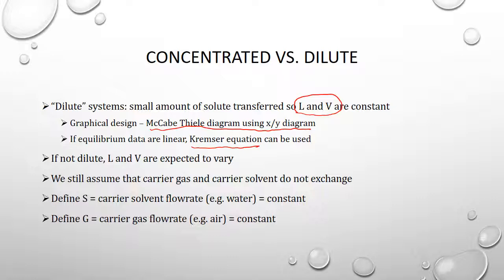The approach for concentrated systems is to assume that the carrier gas and carrier solvent flow rates are constant — as long as the carrier gas doesn't dissolve into the carrier liquid and the liquid doesn't evaporate into the gas phase. We define capital S to be just the carrier solvent flow rate — for example, if it's an aqueous solution, S is the flow rate of just the water, not counting dissolved solutes. In the gas phase, capital G is the molar flow rate of just the carrier gas, which might be air in a stripping situation. We assume both of those are constant.